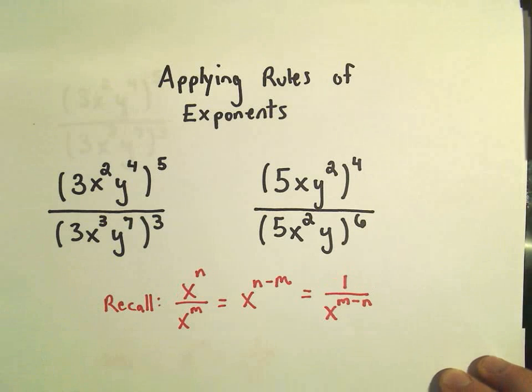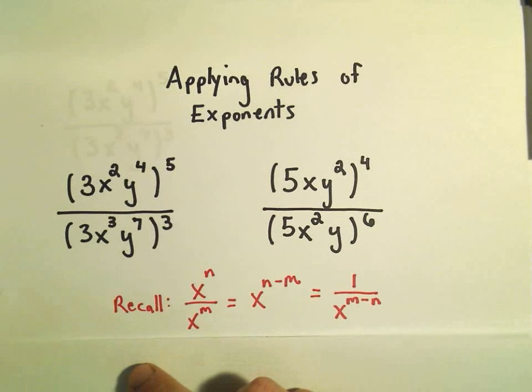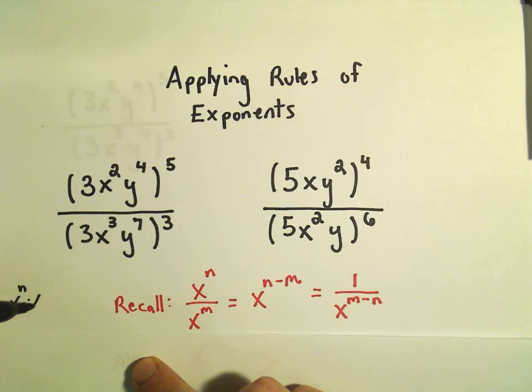Some of them will be things that we've seen in previous videos, but one of the new ideas is we can simplify. So remember when we were multiplying, if we had like bases, x to the n times x to the m, what did we do? Well, we added the exponents, was what the rule said.